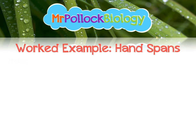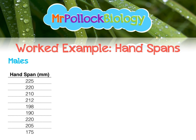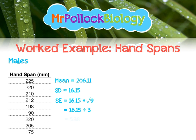Here's some data for males — totally made up. The mean of this data, adding them all together and dividing by 9 (how many data points we have), is 206.11 mm. The standard deviation is 16.15 mm. From there we can work out the standard error, which is the standard deviation divided by the square root of the number of samples: 16.15 divided by root 9, which is the same as 16.15 divided by 3. So our standard error is 5.38.